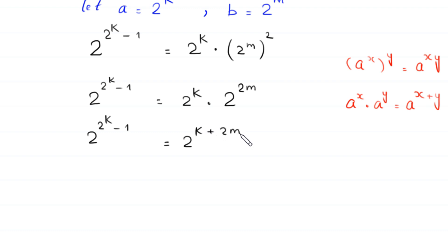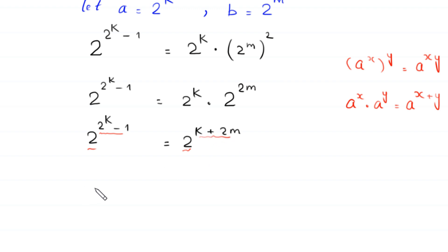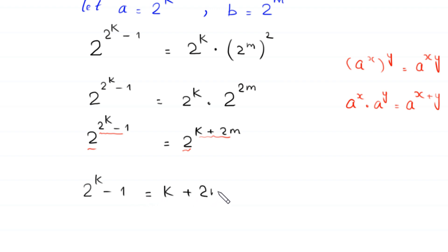Now, since we have the same base on both sides, we can equate the exponents: 2 to the power k minus 1 equals k plus 2m. So we get the equation 2 to the power k minus 1 is equal to k plus 2 times m.